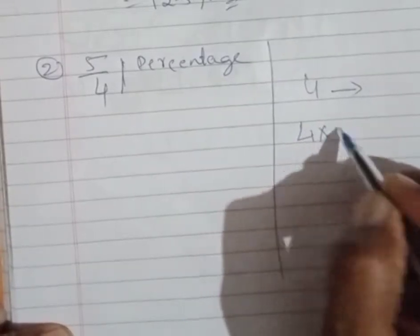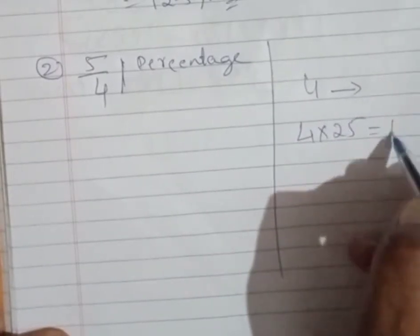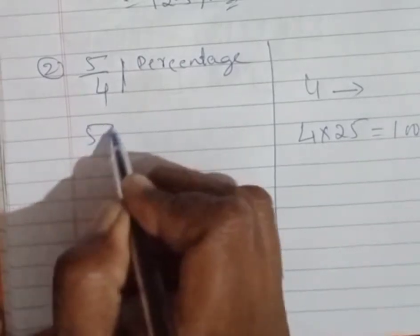So this 4 is a multiple of 100, meaning if you multiply 4 with 25, you know 25 times 4 is 100. So directly you can do this way. See here, I will show you both ways.